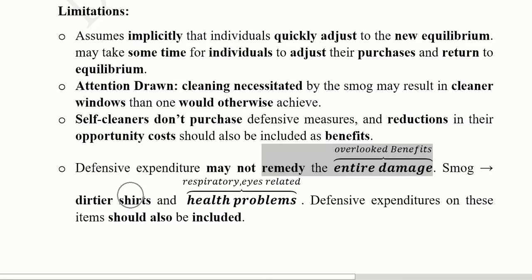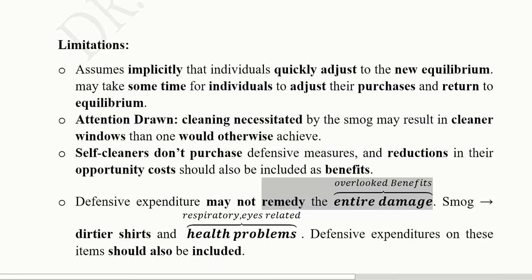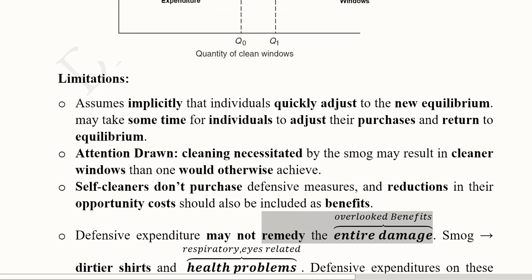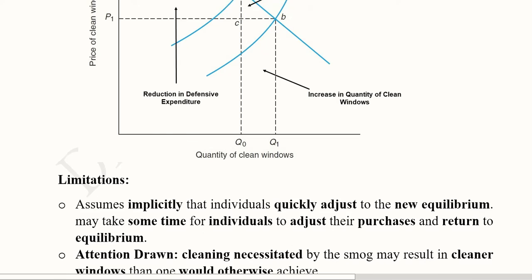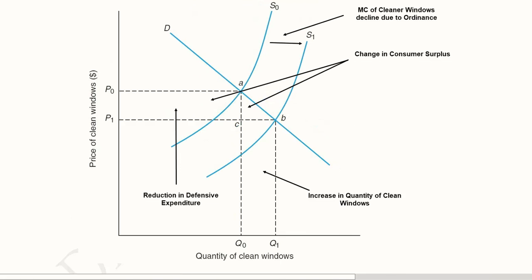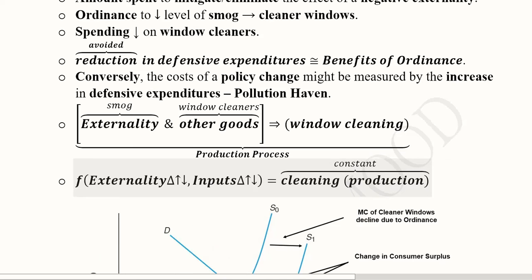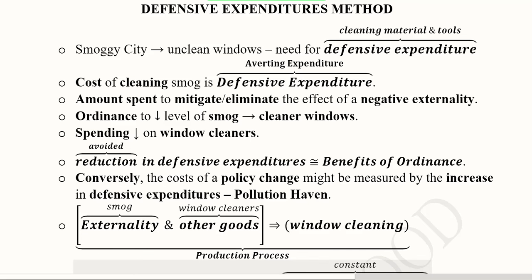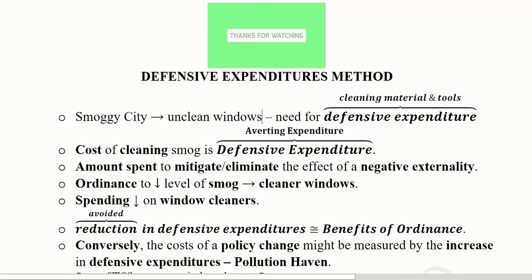So cleaner shirts due to ordinance, reduced health problems due to ordinance, will become some avoided costs and they are also overlooked benefits if we do not include them in our analysis. So in this way, we can try to assess a policy intervention by using this method of defensive expenditures. And this was the diagrammatical depiction of that. This was the concept of it, the example of a smoggy city and the effect on the unclean windows was used in order to explain this concept. So this was yet another method of quantifying a policy intervention. Thank you.